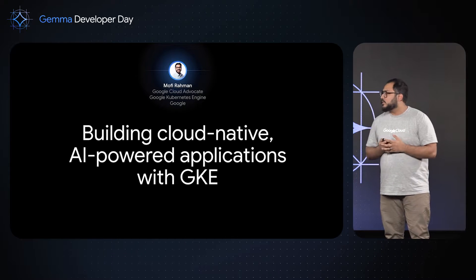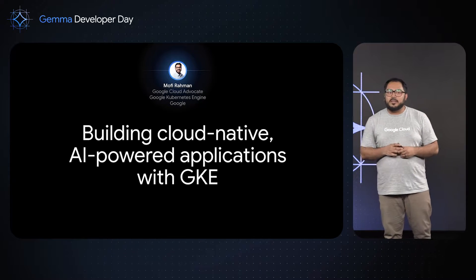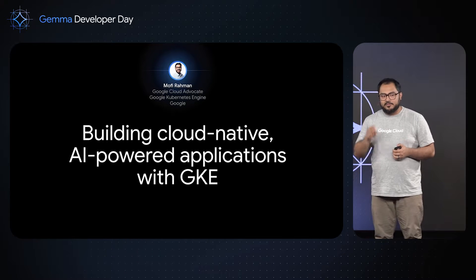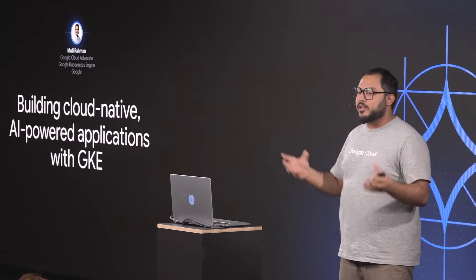When you talk about building cloud-native applications, Kubernetes is probably the first thing a lot of people think about. When talking about AI workloads on Kubernetes, I think of three separate use cases. Number one: you have a model you want to make accessible — the serving and inferencing use case. Number two: you have data you want to train a model with, running fine-tuning or training jobs. Number three, probably the most common: you have an application that talks to AI-related APIs like the Gemini API or OpenAI API.